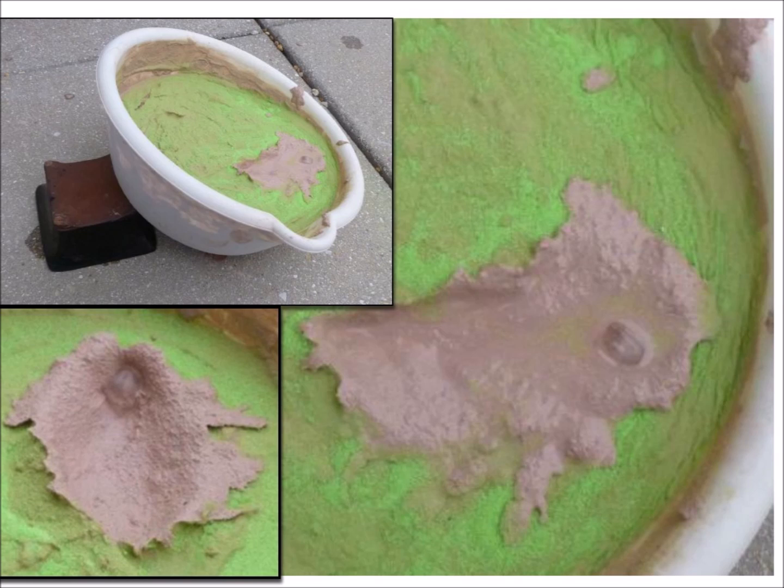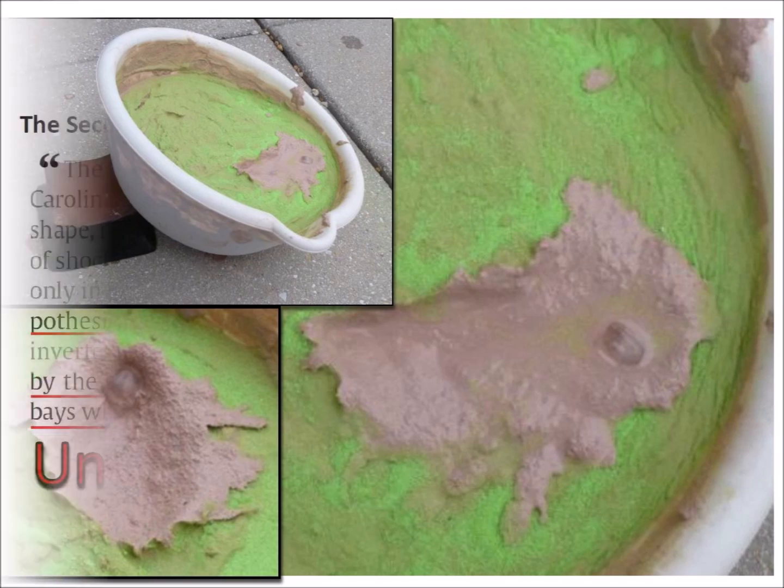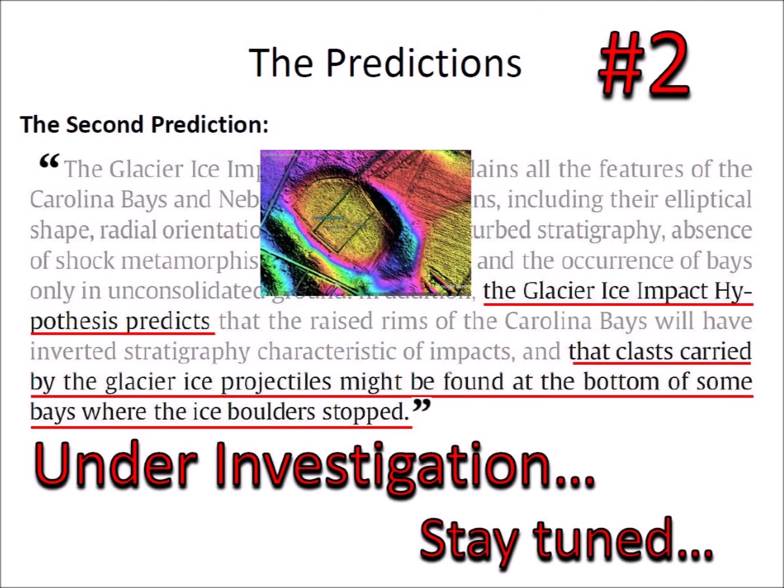The second prediction made by the Glacier Ice Impact Hypothesis is still under investigation. This presentation has looked at the properties of glaciers to formulate an approach for exploring the Carolina Bays and finding clasts that might have been carried by glacier ice boulders ejected by an extraterrestrial impact on the Laurentide Ice Sheet. The exploration of Arabia Bay is the first attempt to find such evidence and is still being processed.